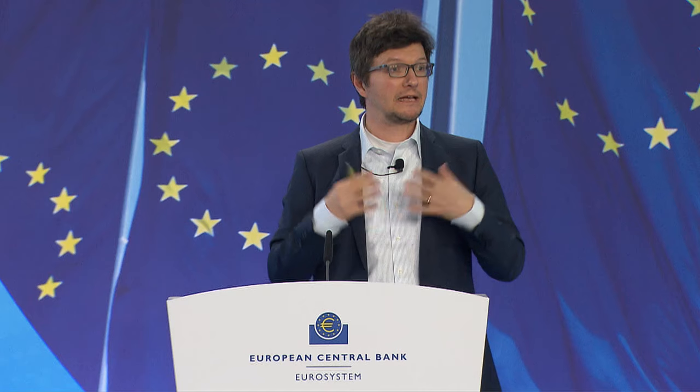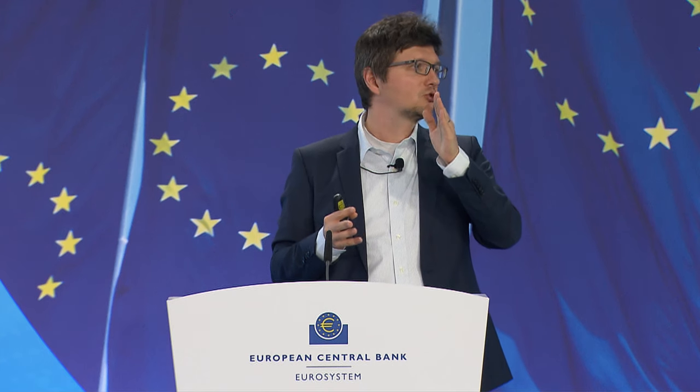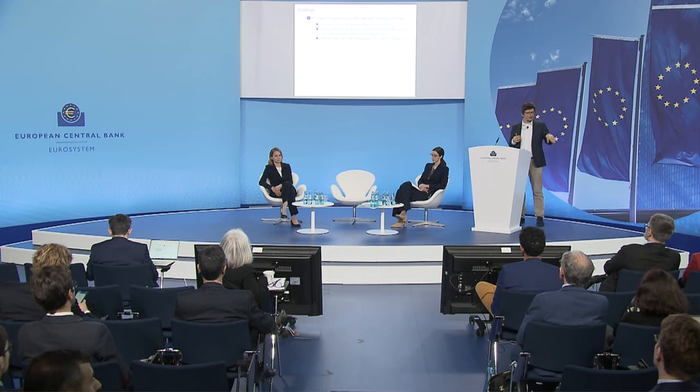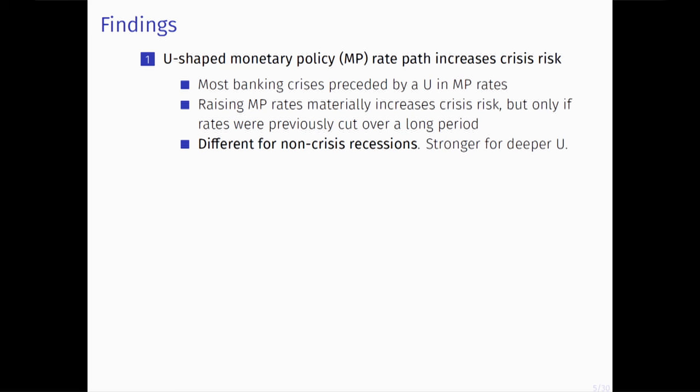Our key findings: first, a U-shaped monetary policy rate path increases crisis risk. Conditional on a crisis, you are very likely to observe a U-shaped rate path before. Second, if you have a U-shaped path — specifically, if you raise rates after a period where you cut them for a long time — you are much more likely to get a crisis. If you raise rates without a prior cutting period, you are not more likely to get a crisis. The U-shape is really key. This is different for non-crisis recessions, which show none of these U-shaped effects. The effect is also stronger for a deeper U-shape: the more you cut before and the more you raise after, the more likely a crisis.